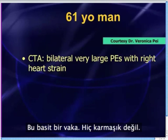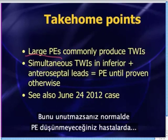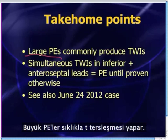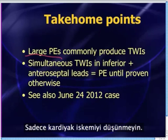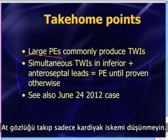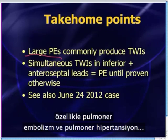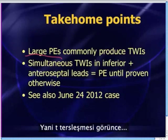Quick take-home points — this is a brief case, not that complicated at all. But here's the important takeaway: if you remember this, you'll save lives and diagnose PEs on patients that you may not have otherwise been thinking PE. Large PEs very commonly produce T-wave inversions. When you see T-wave inversions, don't have tunnel vision and just think cardiac ischemia. Please remember that acute pulmonary disease — especially PEs and pulmonary hypertension — can also produce T-wave inversions. Think about the lungs as well.